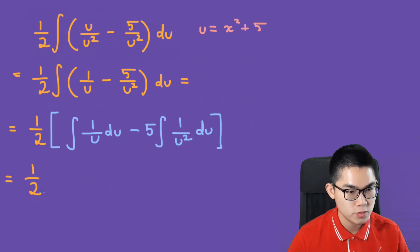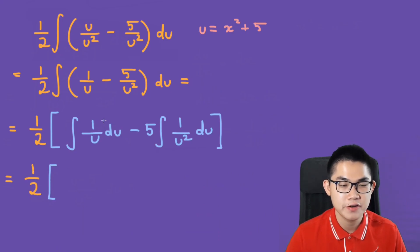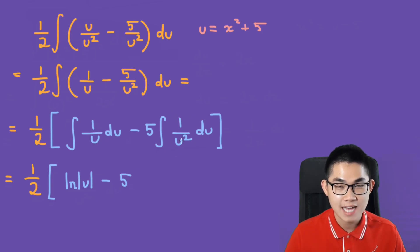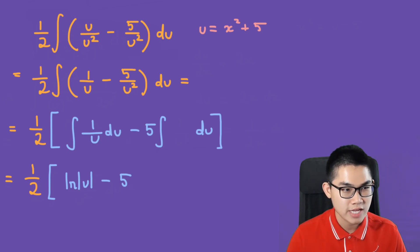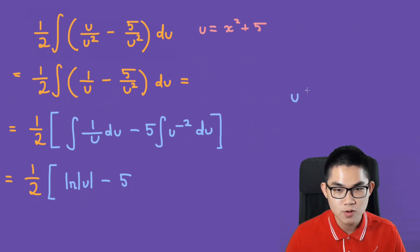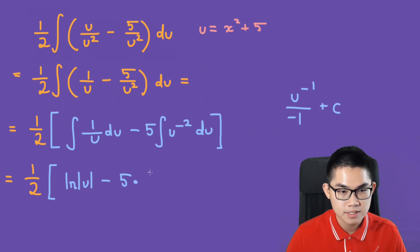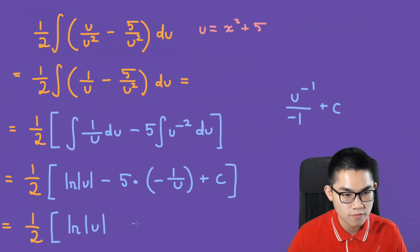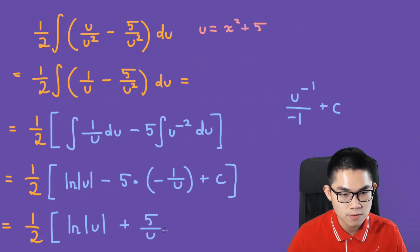We get 1 over 2 times: the antiderivative of 1 over u is the natural log of the absolute value of u, then minus 5 times the antiderivative of u to the power of negative 2. Rewriting 1 over u squared as u to the negative 2, the antiderivative is u to the negative 1 over negative 1, which gives negative 1 over u. So we have 1 over 2 times the quantity ln of absolute value of u, minus 5 times negative 1 over u, which equals plus 5 over u, plus c.